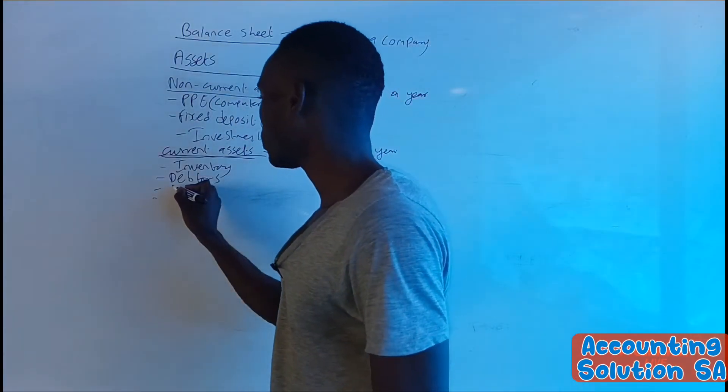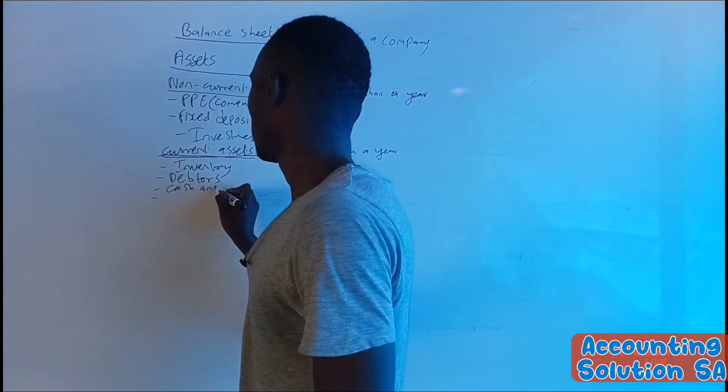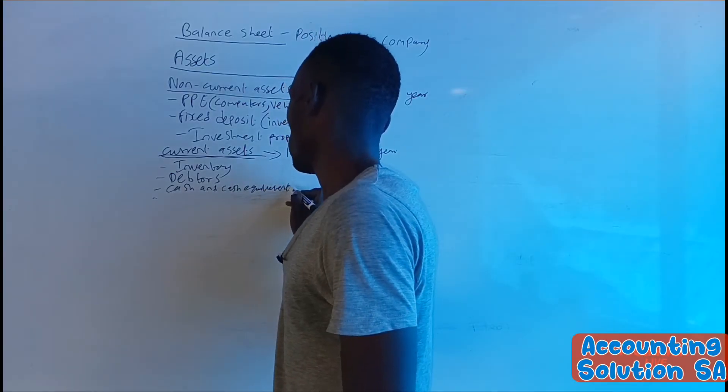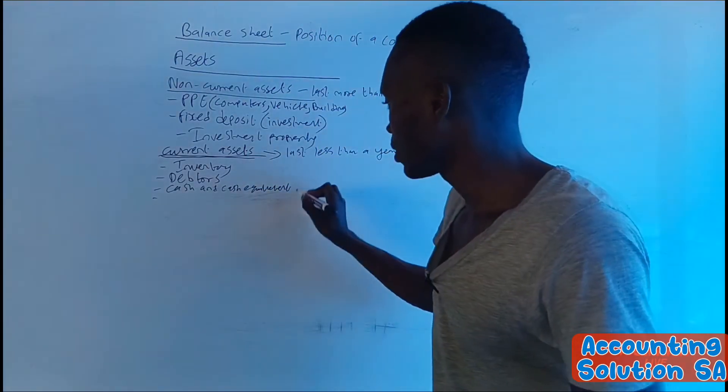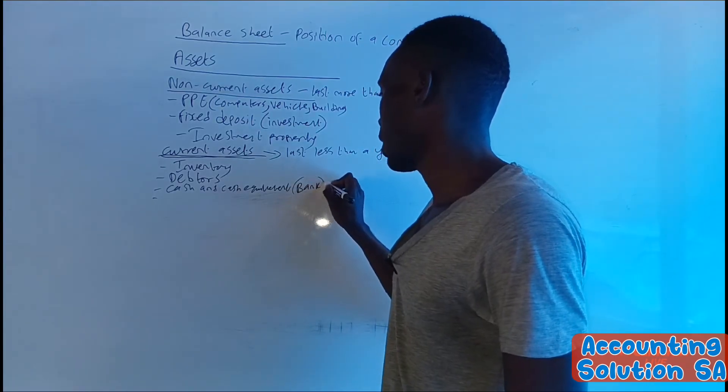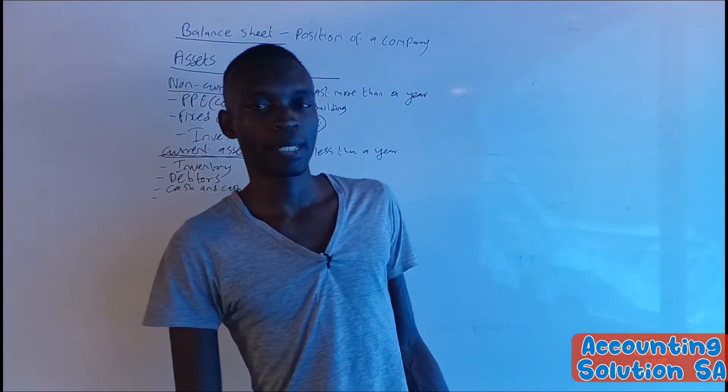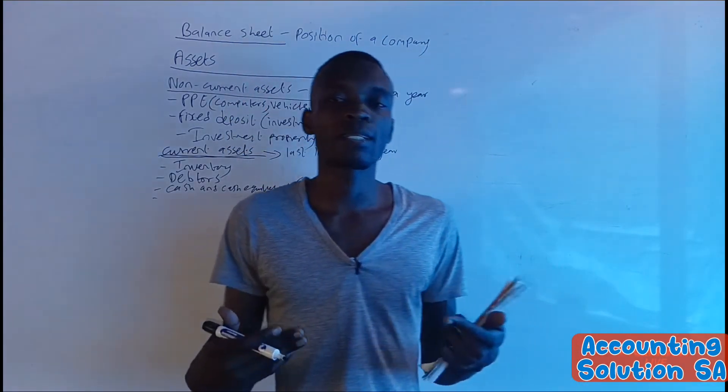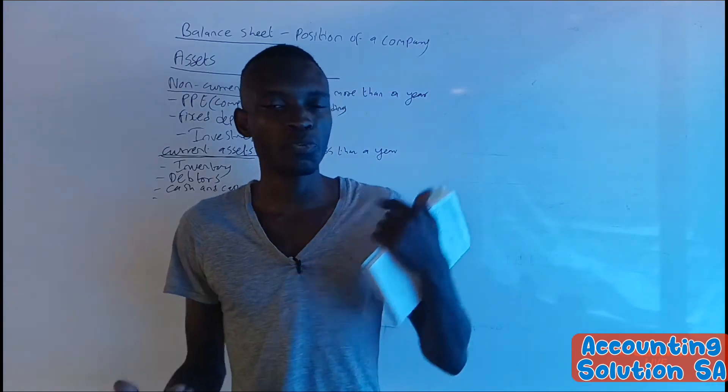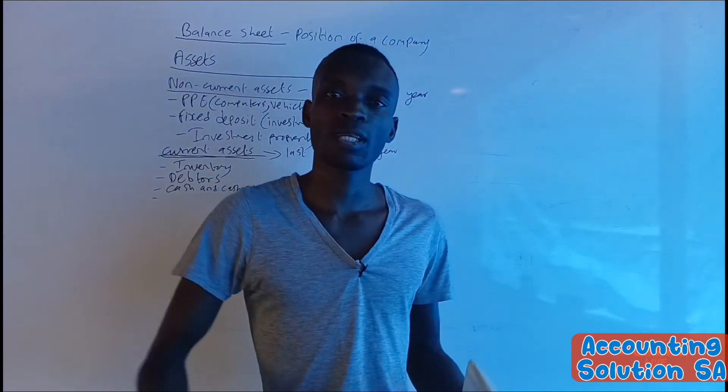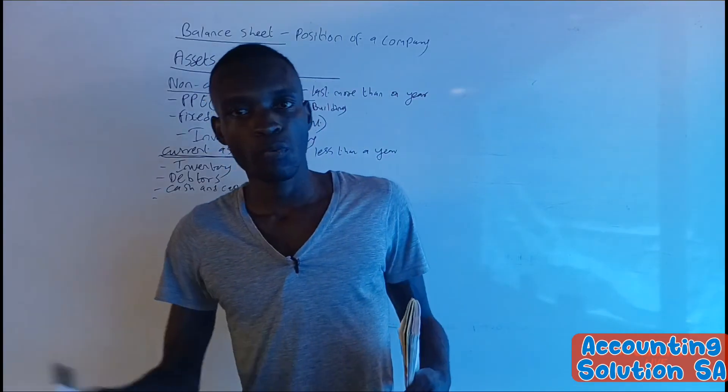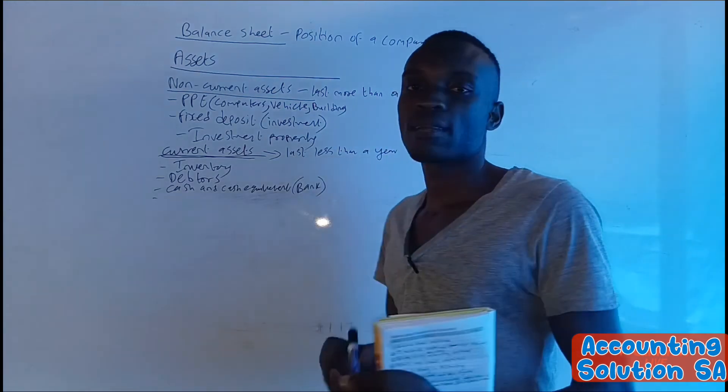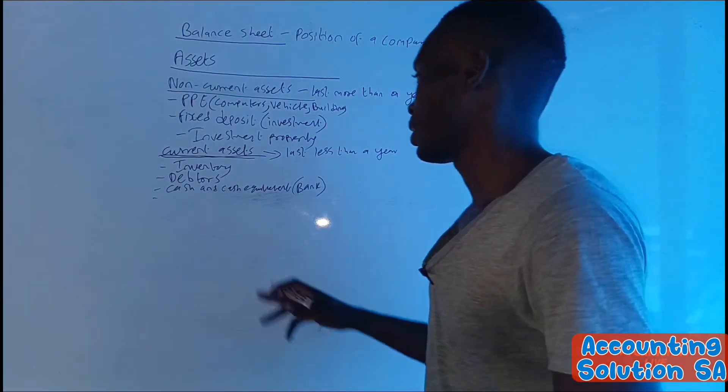We also have cash and cash equivalent. This is the note where inside you are going to find bank, petty cash. When we talk about bank in our business, normally cash flows in and out almost every day. When we sell, we are receiving cash. When we go and purchase stock, we are paying out cash, which means that the bank movement is within a year. It's going to move each and every day.